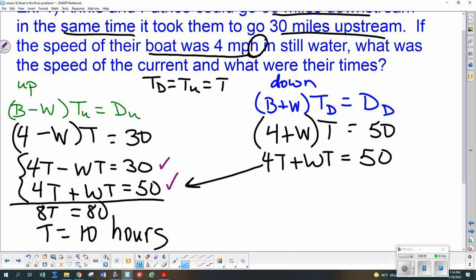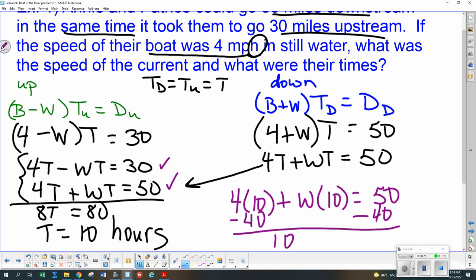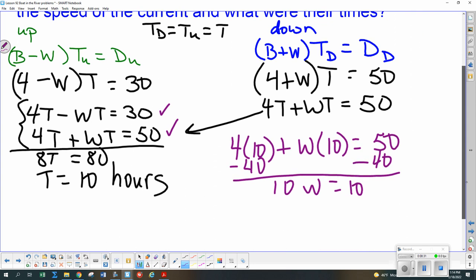So Shayla, you pick which one you'd like, the 30 or the 50 one. Okay, Shayla likes the bottom one. So 4 times 10 plus W times 10 needs to be 50. 4 times 10 is 40. So if we subtract that on both sides, 10W is 10. So everybody shout out what's W. 1 and our units are miles per hour.